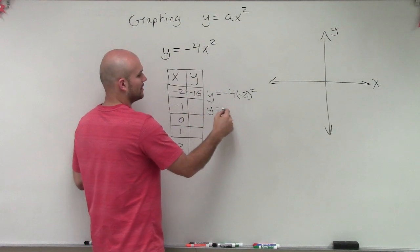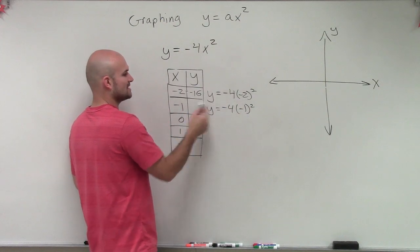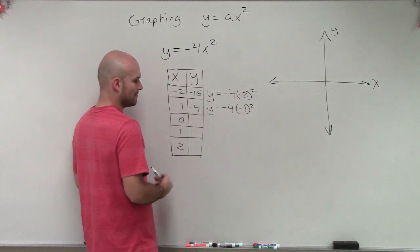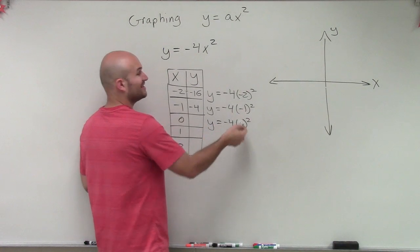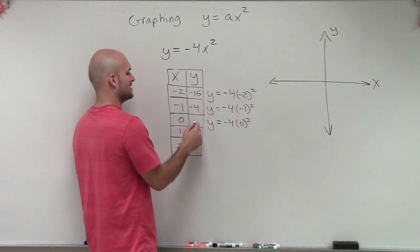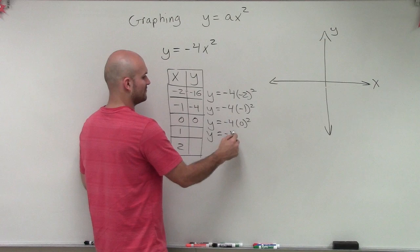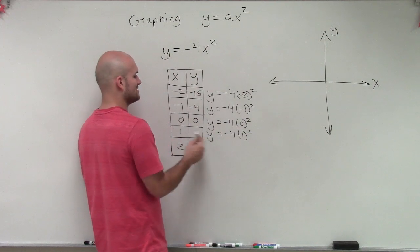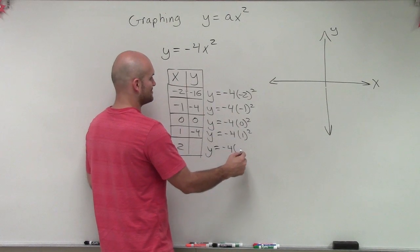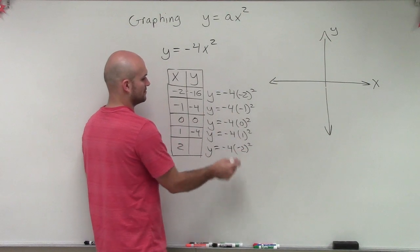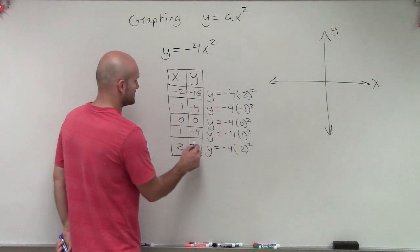Now I plug in negative 1. Negative 1 squared is positive 1. Positive 1 times negative 4 is negative 4. Then we have y equals negative 4 times 0 squared. 0 squared is 0. 0 times negative 4 is 0. Then we have y equals negative 4 times 1 squared. 1 squared is 1. 1 times negative 4 is negative 4. And then we have y equals negative 4 times 2 squared. Positive 2 squared is 4. 4 times negative 4 is negative 16.